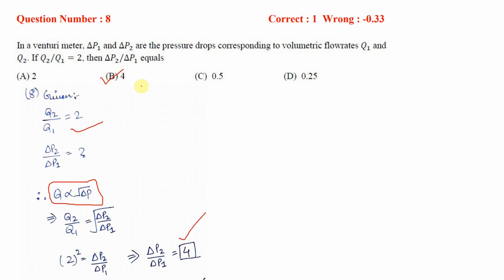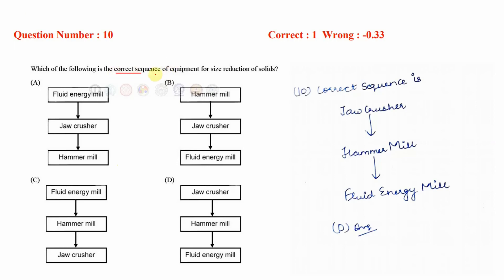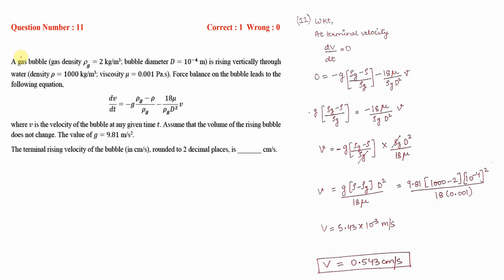In this question we have to tell the correct sequence of equipment for size reduction of solids. The correct sequence is jaw crusher, hammer mill, and fluid energy mill. The jaw crusher produces the biggest particles, followed by hammer mill, and the finest particles are produced in the fluid energy mill.